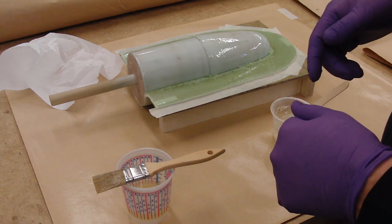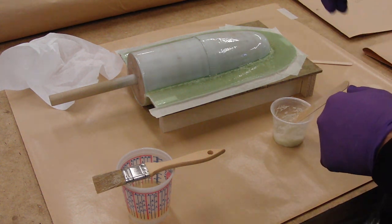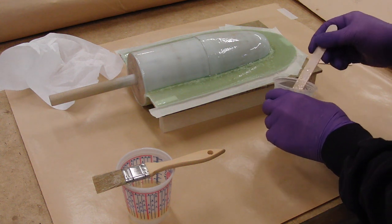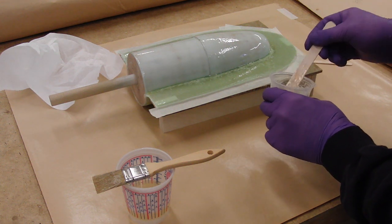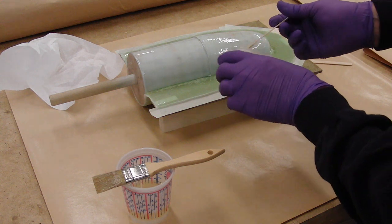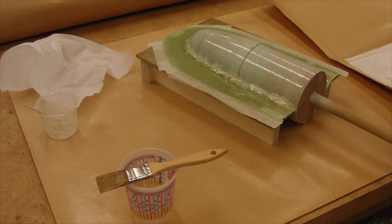So, once again, paint a coat of epoxy over everything, create fillets around the edges, and then apply the cloth.